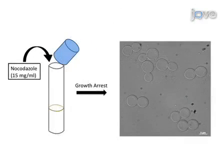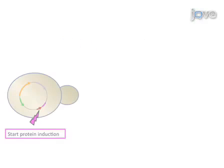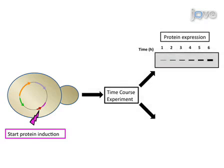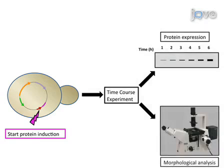cells are synchronized by a cortisol-mediated growth arrest. Finally, nth2 expression is induced by transferring cells to media lacking methionine. During the time course experiment, protein concentration is monitored by western blotting and morphological phenotype development by microscopy.